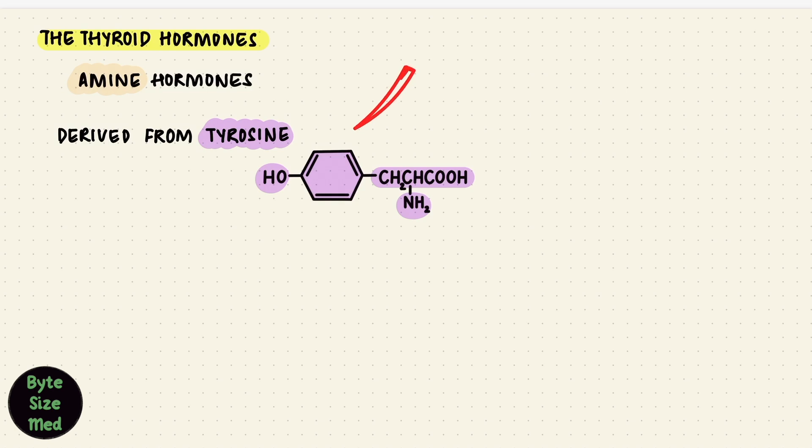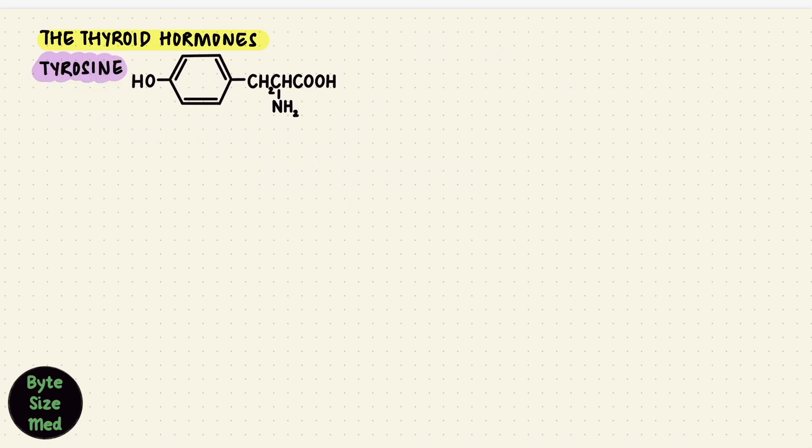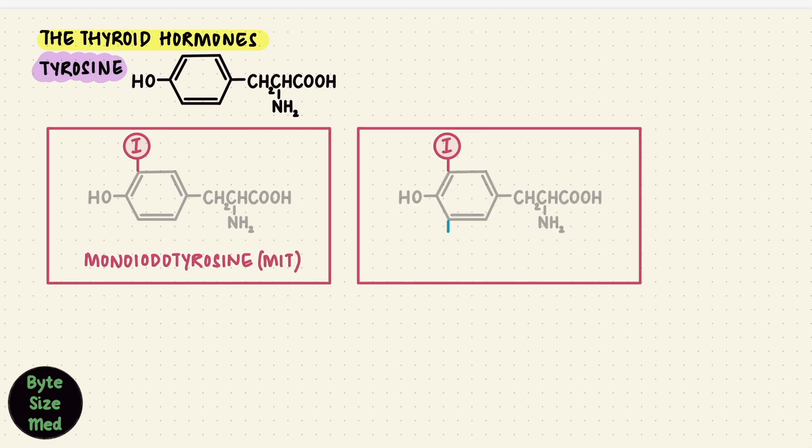So this is tyrosine, and to synthesize the thyroid hormone, it has to get iodinated. Iodine is going to be added to this structure stepwise. When we add one, that's monoiodotyrosine, MIT, that's because it just has one. When we add two, it'll become diiodotyrosine, DIT, because it has two.